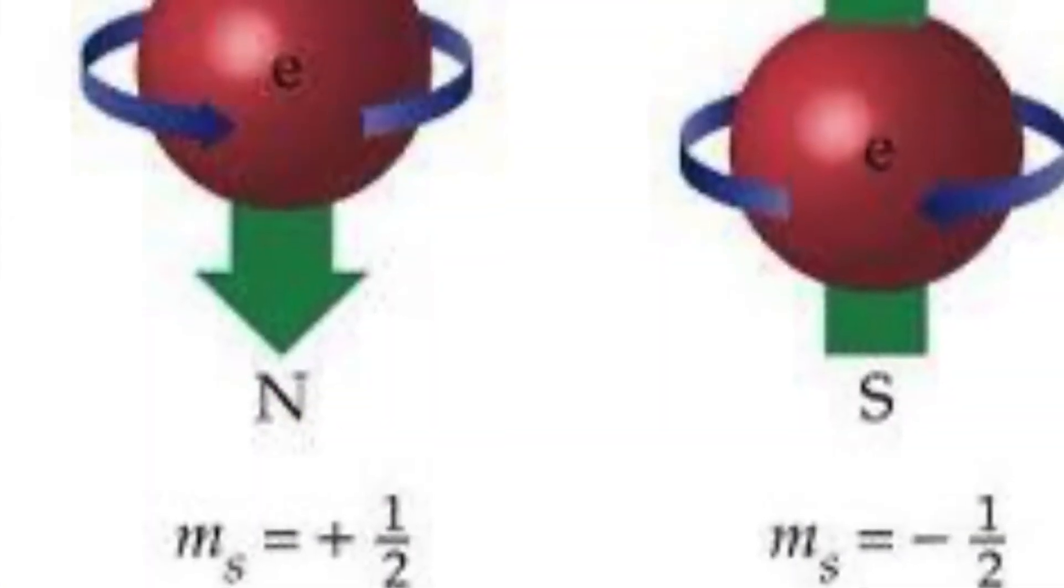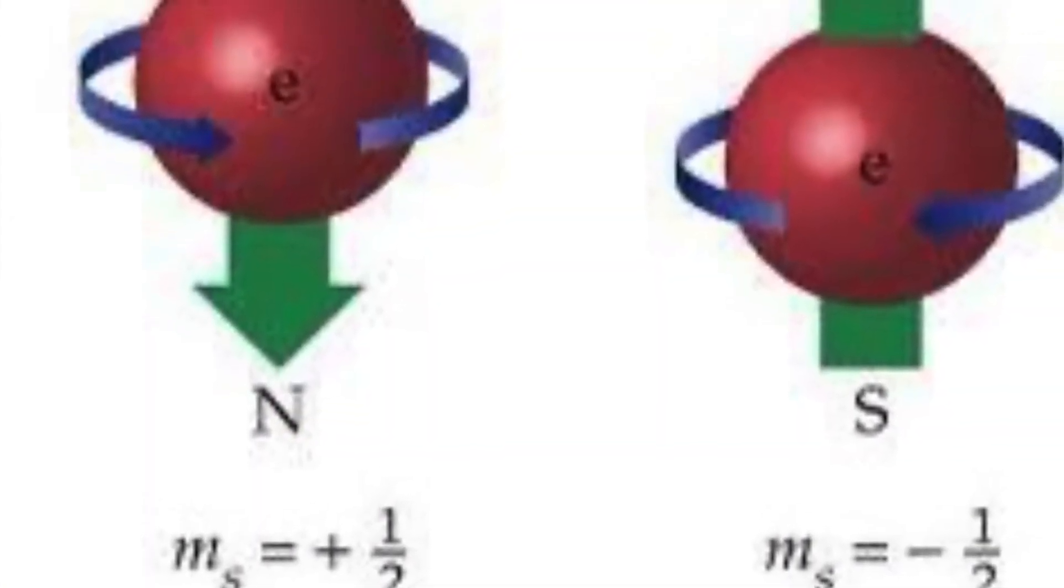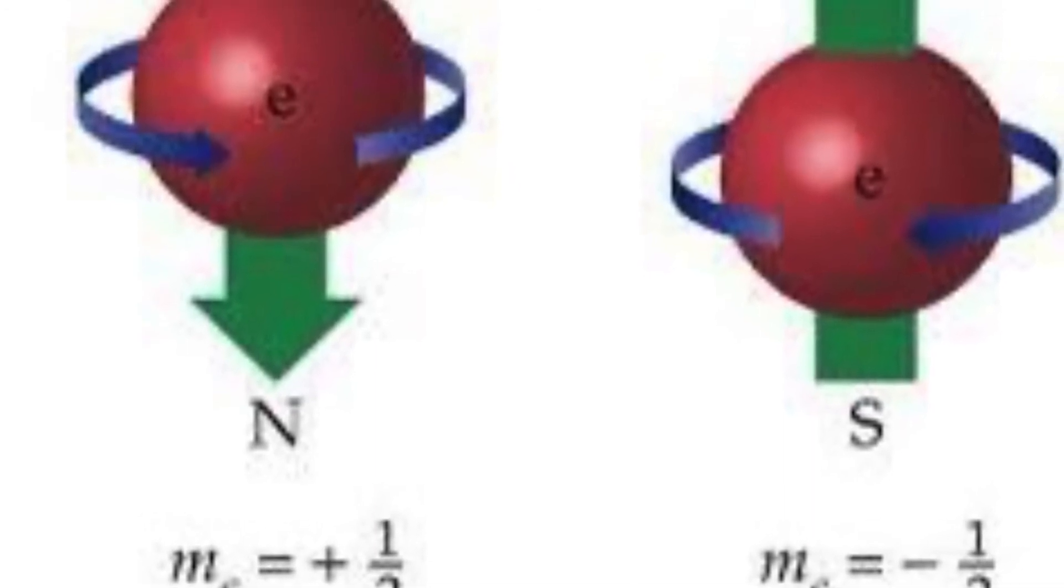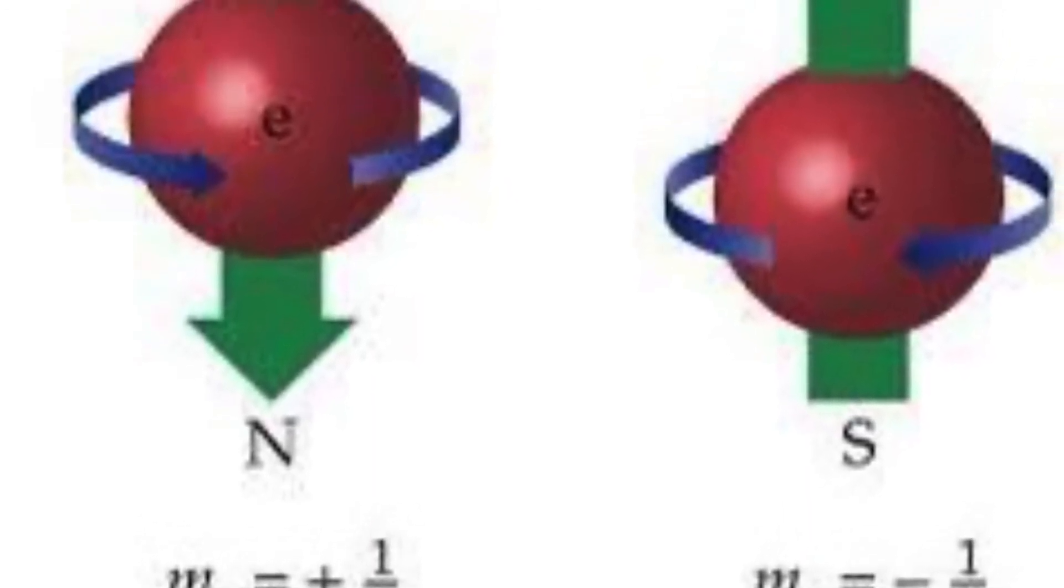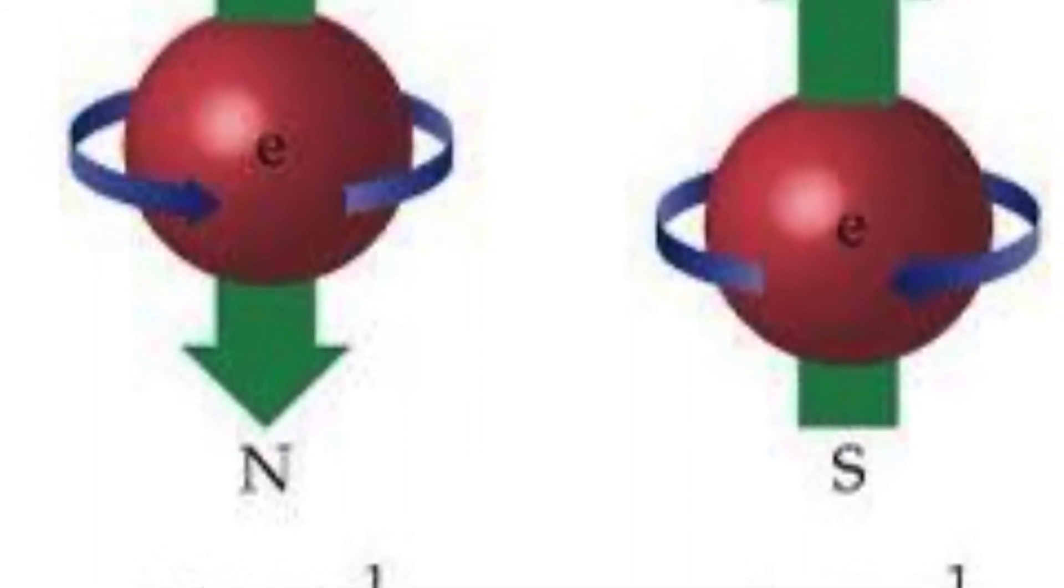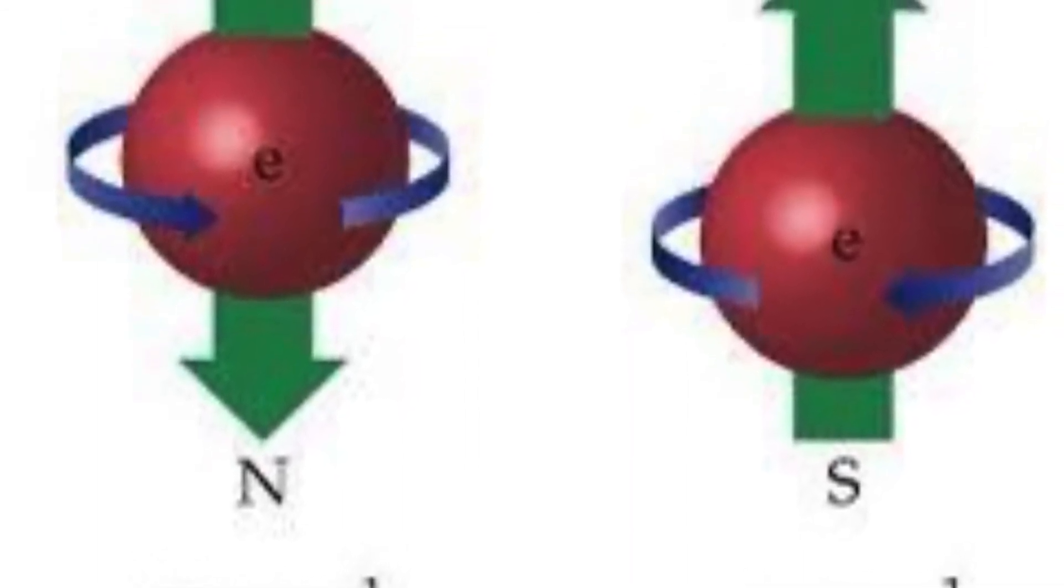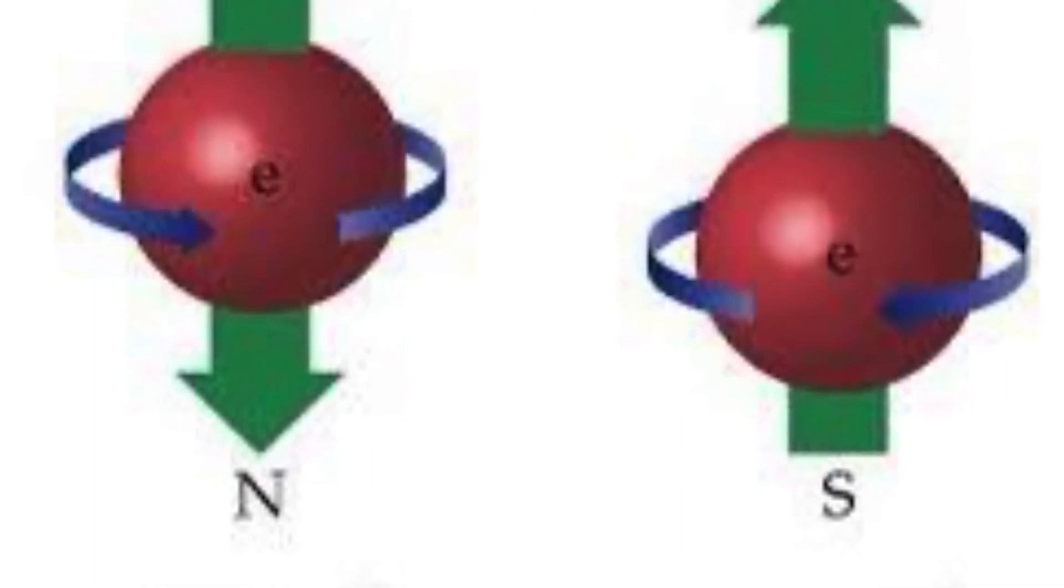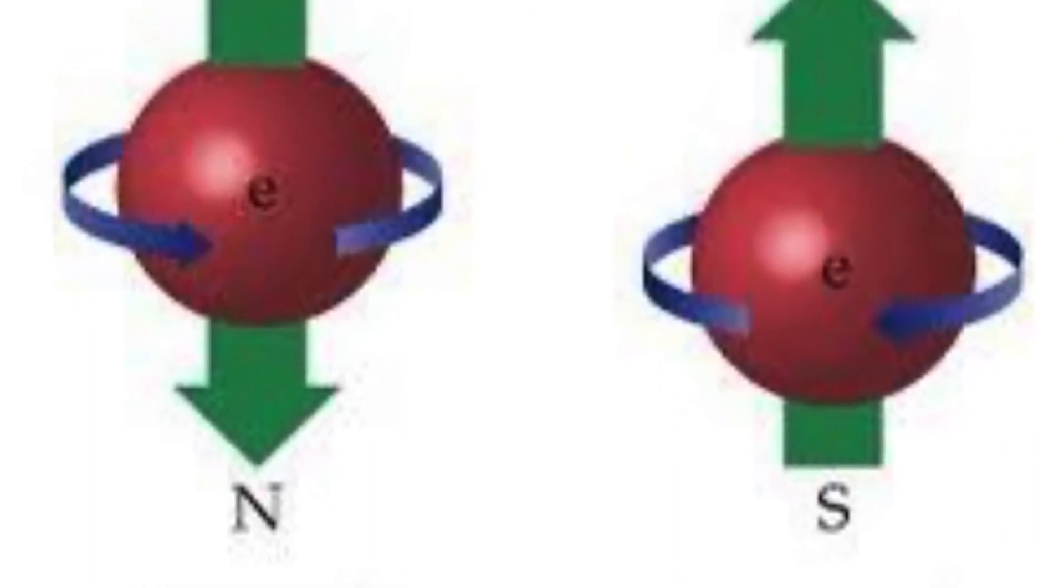A final quantum concept is electron spin. Electrons only exhibit two possible orientations, either with the magnetic field or against it. We refer to this property of electrons as electron spin. Any given electron is either spin up or spin down.